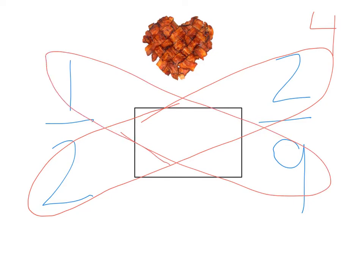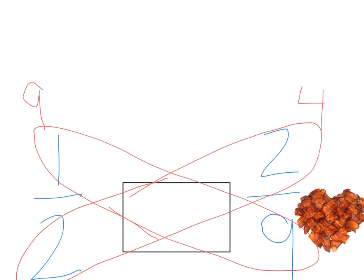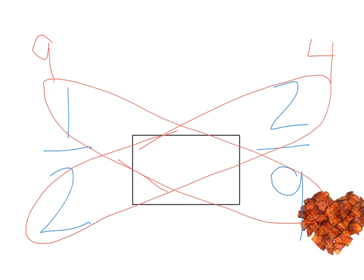And now you do nine times one. And that gives you nine, and you put it right above. And then to complete her butterfly, I'm going to move my bacon out of the way. To complete her butterfly, she would draw the body of the butterfly.